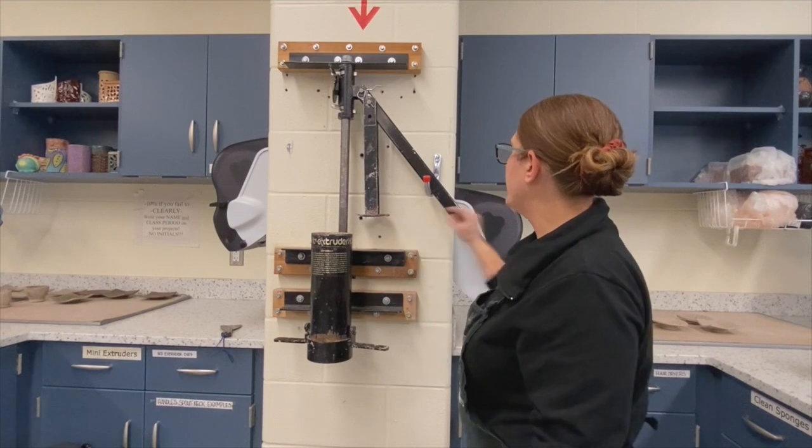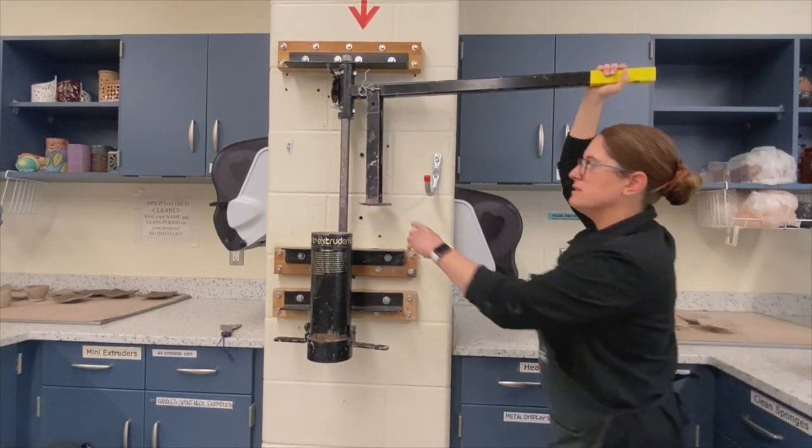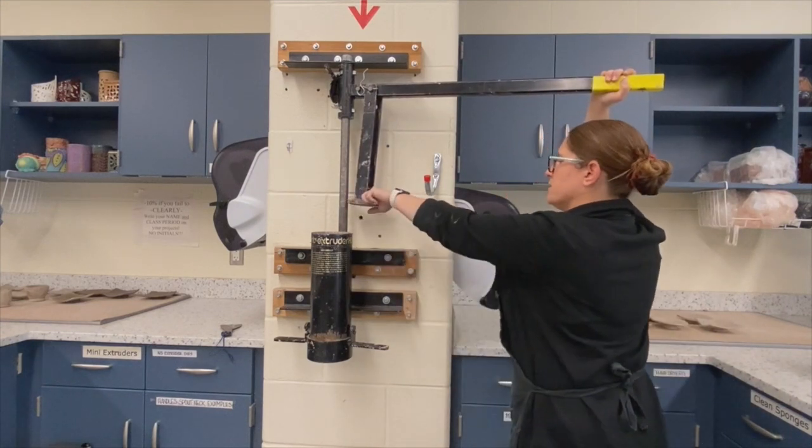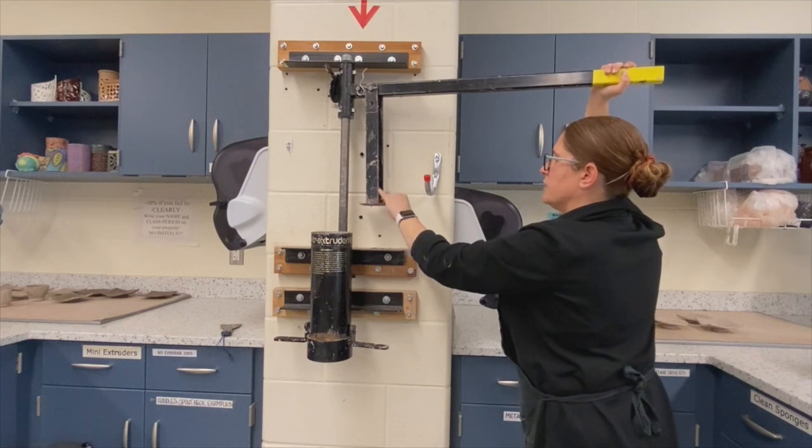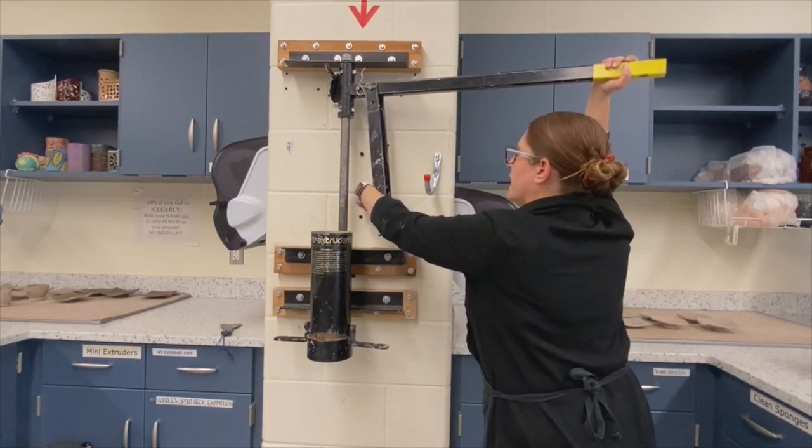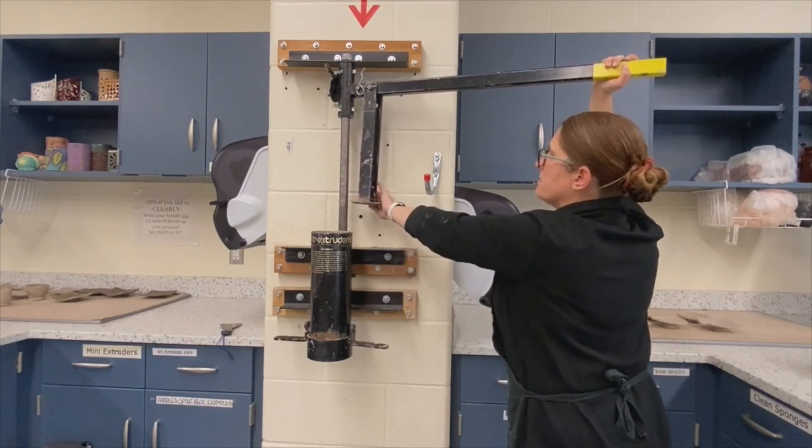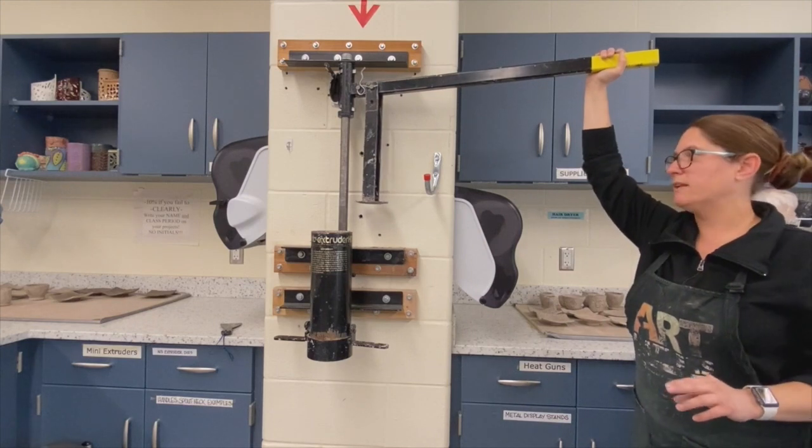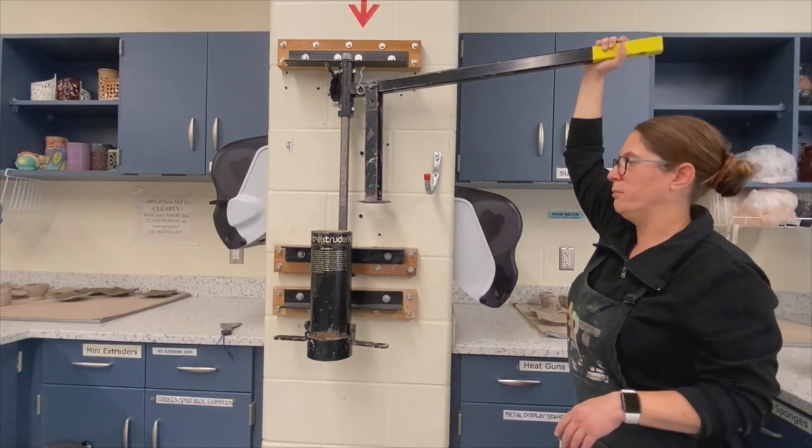This right here is the handle. This is the handle that we'll use, and this is the plunger part. I'm noticing that there's some dried clay on there, so I'm going to get that off before I use this. It is a good idea to check for bone dry clay on the extruder before you use it. If something didn't get cleaned up well, you'll want to take the time to get the dried clay off before you ruin your actual clay that you're going to put in there.